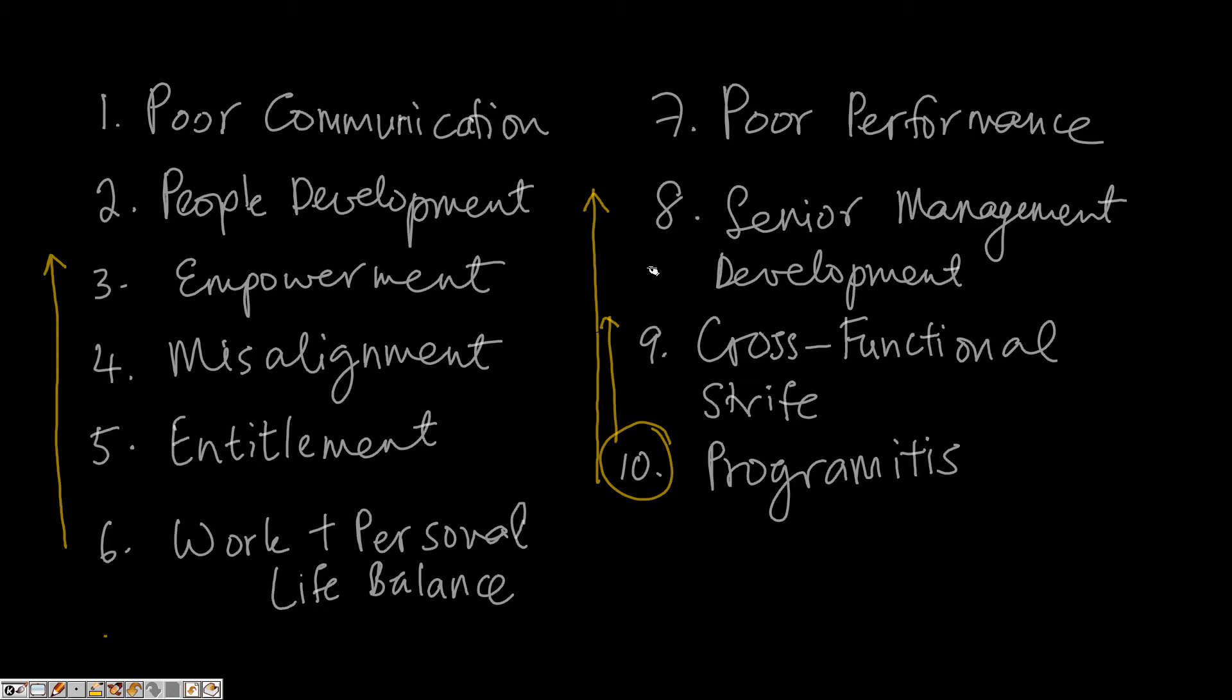Starting at the bottom with program-itis, cross-functional strife, senior management development, poor performance, work and personal life balance, entitlement, misalignment, empowerment. And for this episode we're going to focus on the matter of people development.